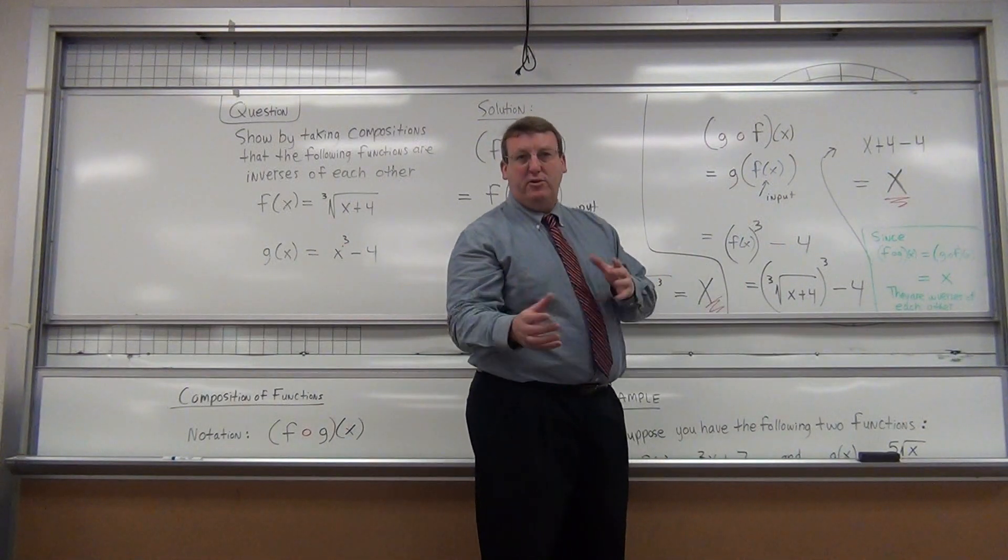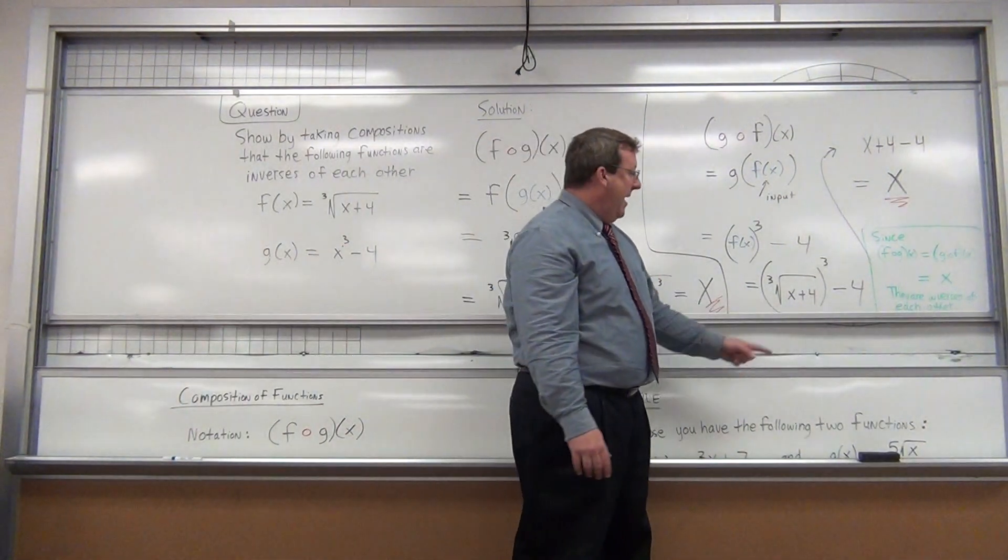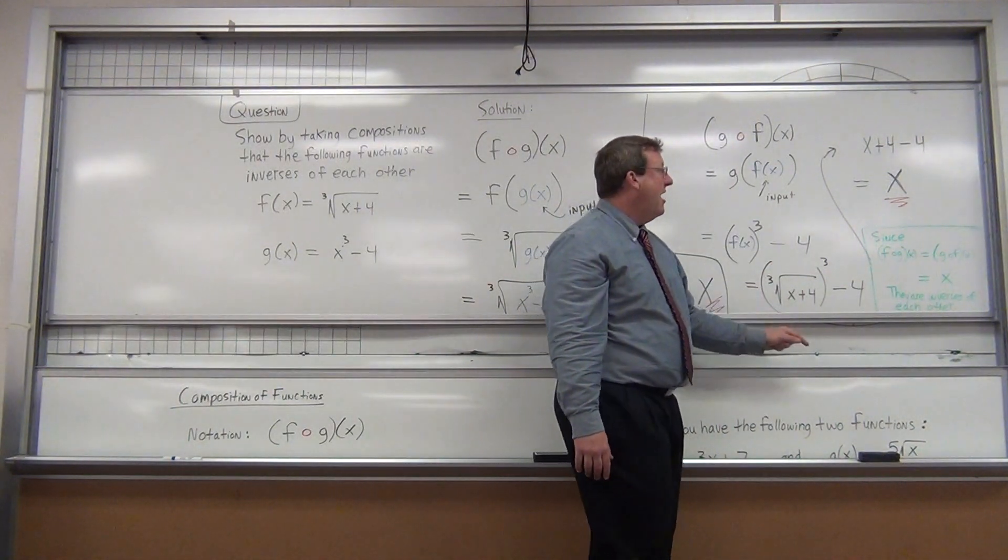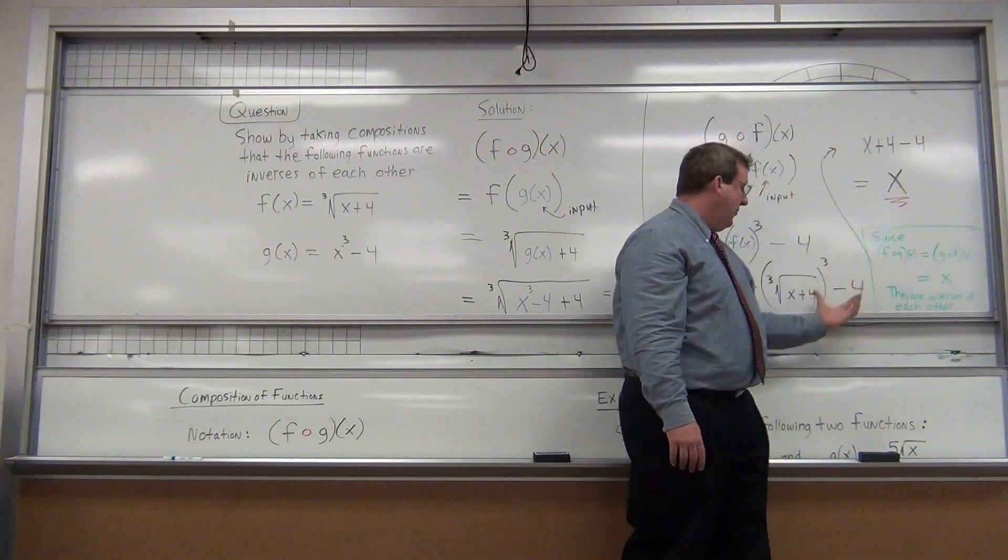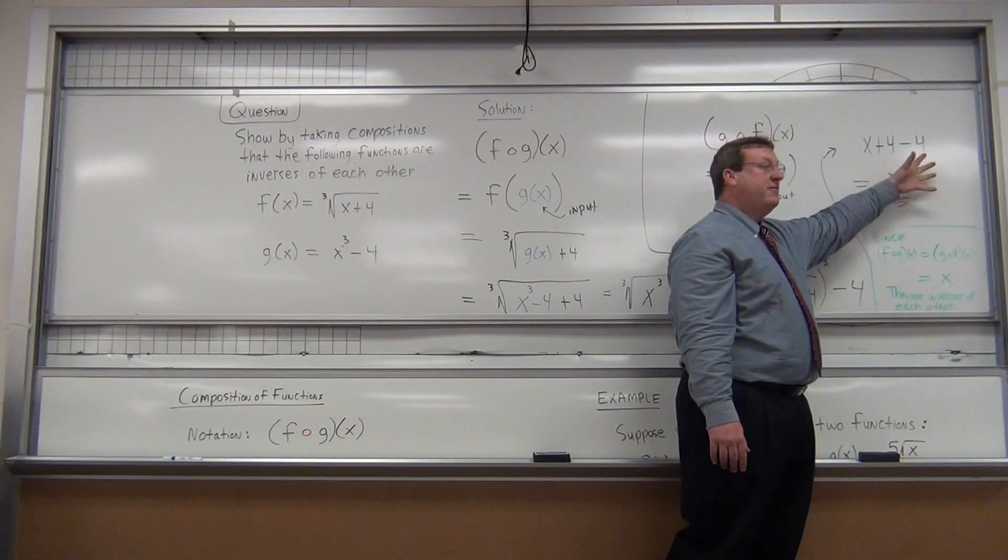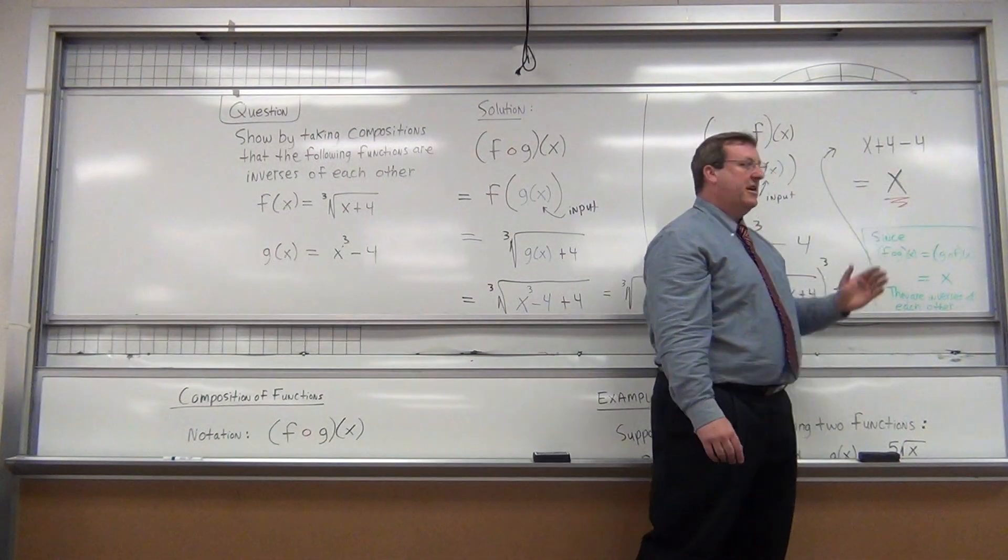So, we substitute that in for f of x, the cube root of x plus four. We cube it. Then we subtract four. Now, here's something nice. If you remember your review on radicals. What happens when you cube a cube root? They cancel each other out. And you're left with x plus four. The radical goes away. The minus four. The minus four is still there. Four minus four is zero. You're left with x.